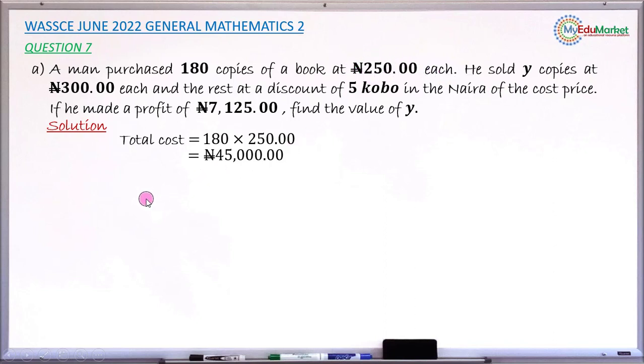So the total sales is Y multiplied by 300 plus 180 minus Y multiplied by this rate. You can see this is 95 over 100. I simply removed the 5% discount from 100%. That gives 95. So 95 over 100 multiplied by the cost price, which is 250.